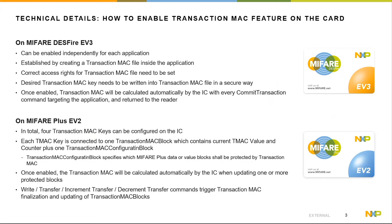For MIFARE Plus EV2, in total four Transaction MAC keys can be configured on the card. These Transaction MAC keys are connected to so-called Transaction MAC blocks and Transaction MAC configuration blocks. Once enabled, the Transaction MAC will automatically be calculated by the card when updating memory blocks protected by the Transaction MAC feature. Several commands — such as write or transfer — trigger the Transaction MAC finalization and update the related Transaction MAC blocks.